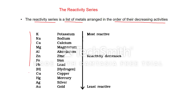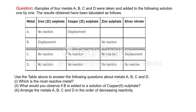In the reactivity series, potassium is the most active metal and gold is the least active. Note that hydrogen is not a metal but is included in the series. Metals above hydrogen in the series can displace hydrogen from dilute acids and liberate hydrogen gas, while metals below hydrogen cannot displace hydrogen from dilute acids.